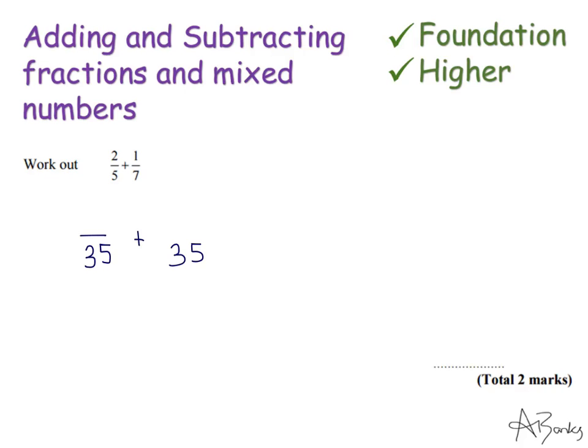Now I can't just do that and keep my numerators as they are. I'm going to have to change the numerators as well so that I've got an equivalent fraction. I don't want to actually change the value of the fraction. To get from 5 to 35, I've had to times by 7, so I'm timesing the denominator by 7. I'll have to times the numerator by 7 as well in order to keep it an equivalent fraction. So 2 times 7 is 14. So 2 fifths is equivalent to 14 thirty fifths.